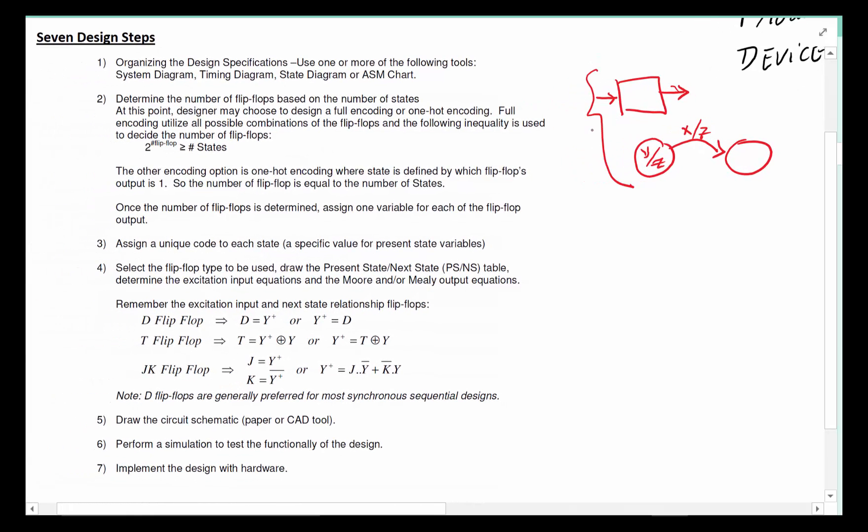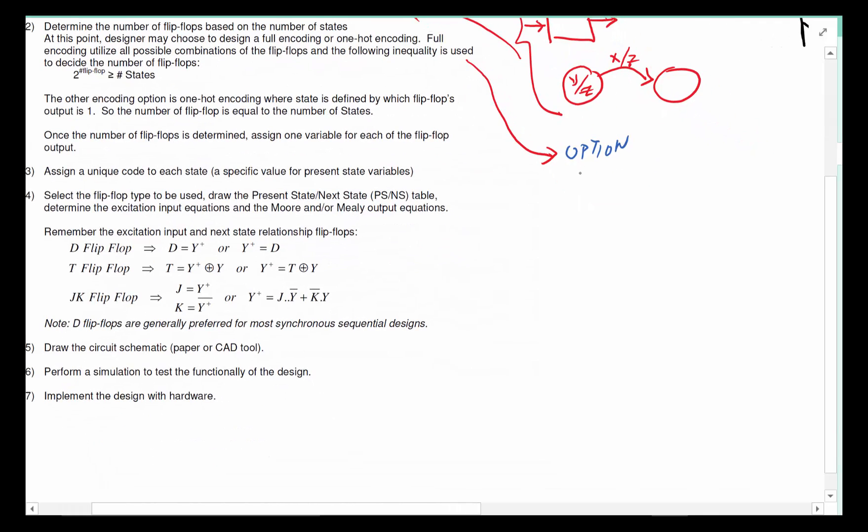Step two would be to determine the number of flip-flops based on the number of states. This is the first time we run into having options. Here we have an option.